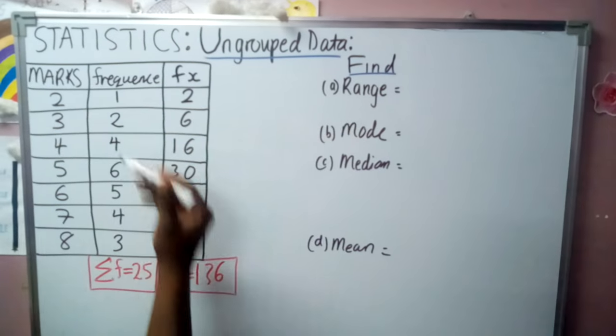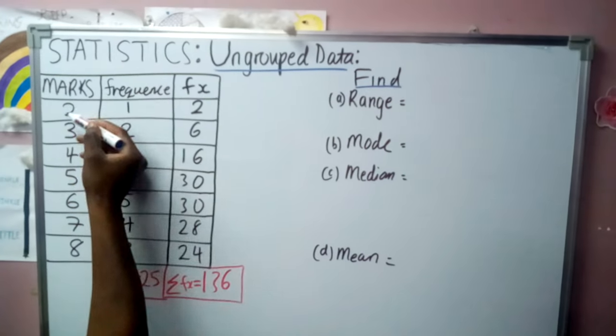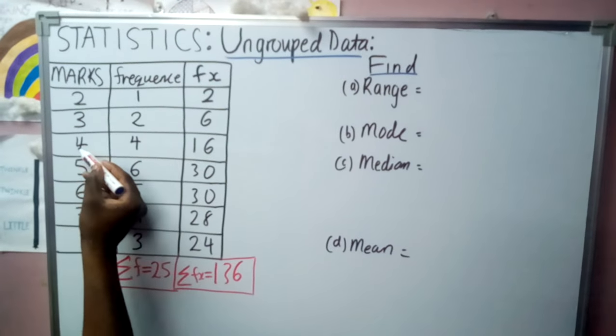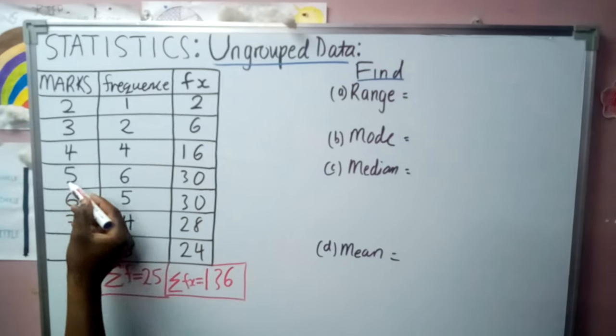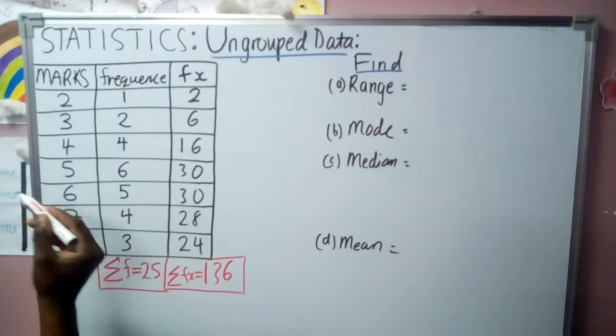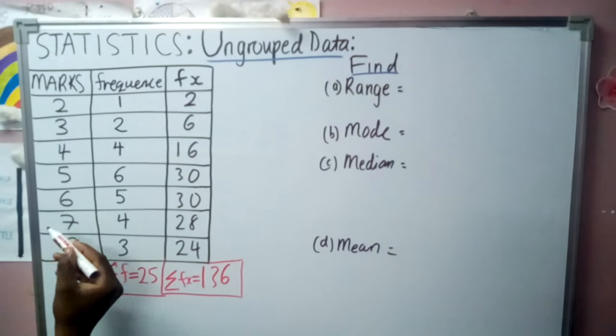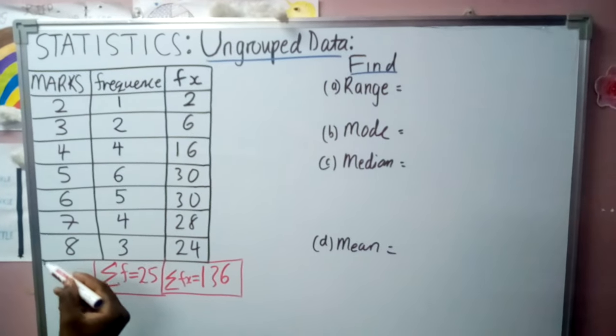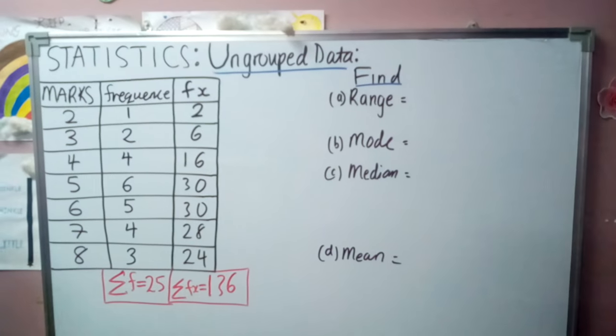Frequency is the number of times these marks are repeating. 2 is repeating 1 time, 3 is repeating 2 times, 4 is repeating 4 times, 5 is repeating 6 times, 6 is repeating 5 times, 7 is repeating 4 times, and 8 is repeating 3 times.